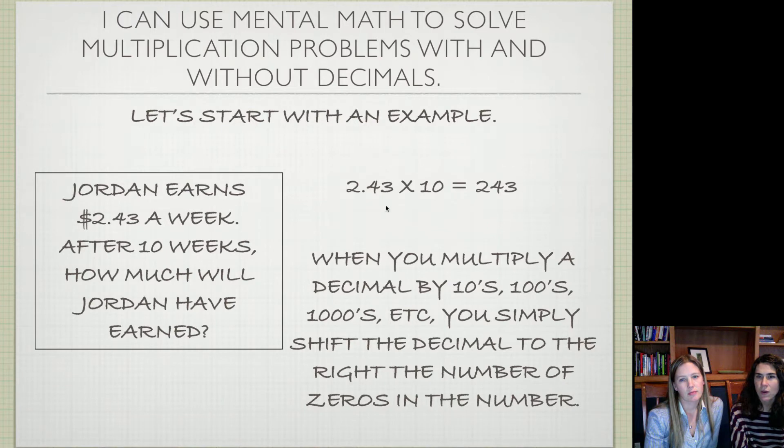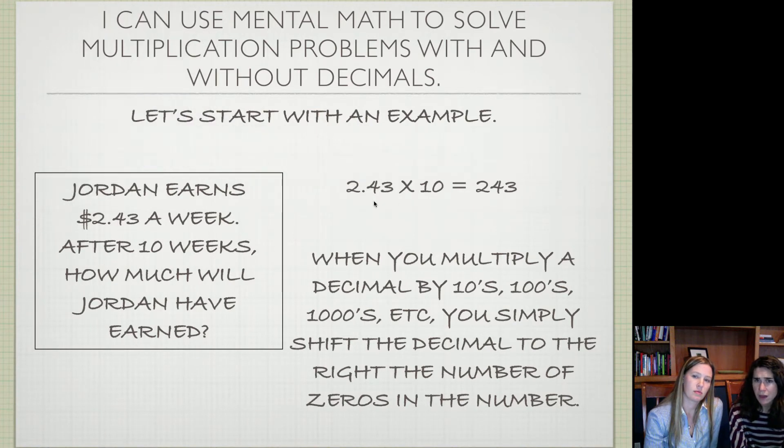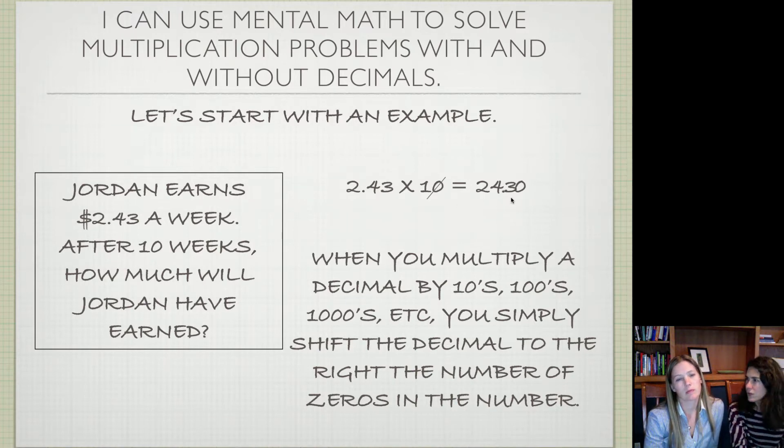We're going to apply that same rule. We have $2.43 times 10, and we want to think about this idea. When you multiply a decimal by either tens or hundreds, thousands, etc., you simply just shift that decimal to the right the number of zeros in the number. We're just going to shift our decimal over one place value. Since we're dealing with money, it's $24.30. That is really the only idea, that shift in our decimal.